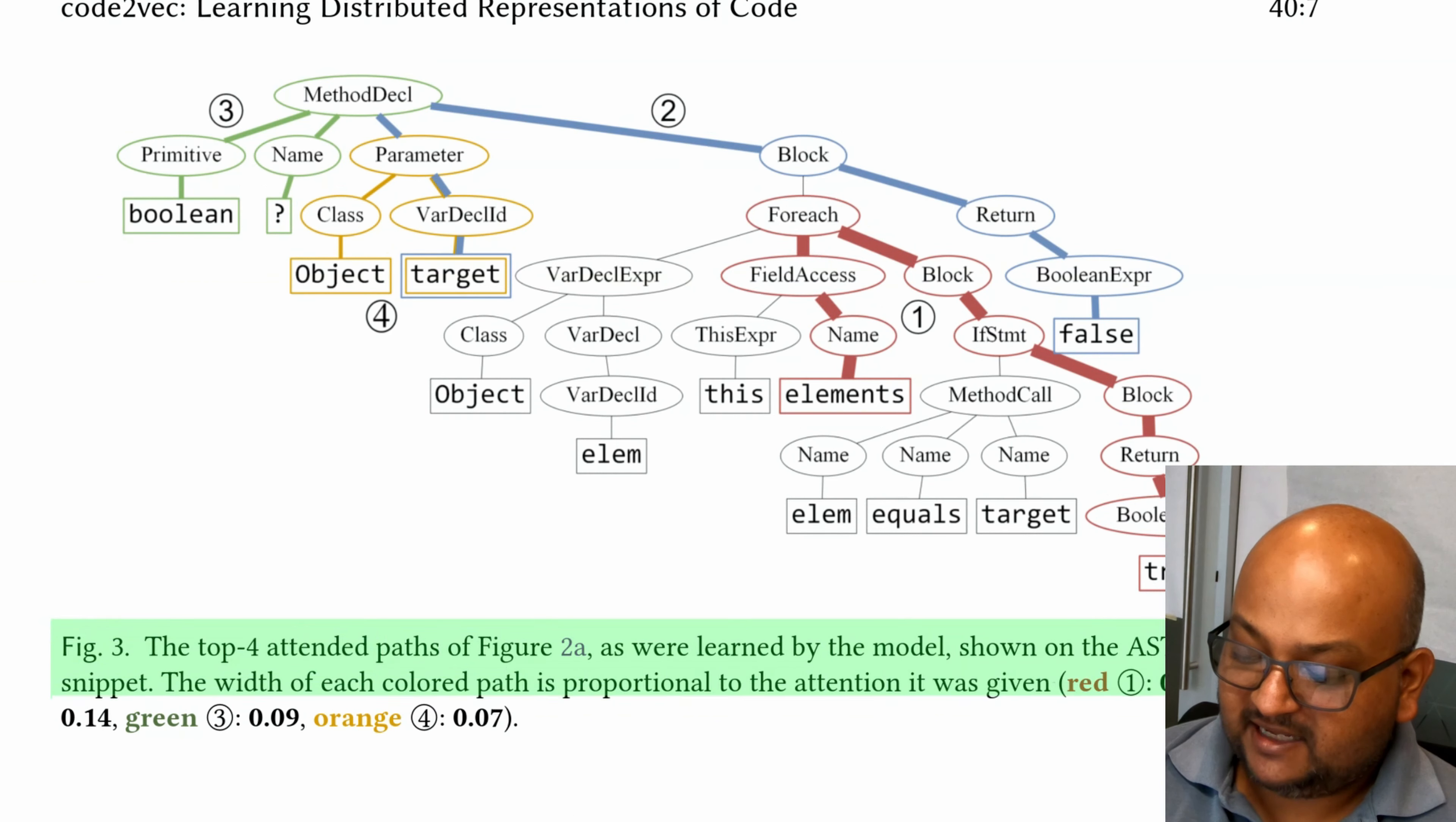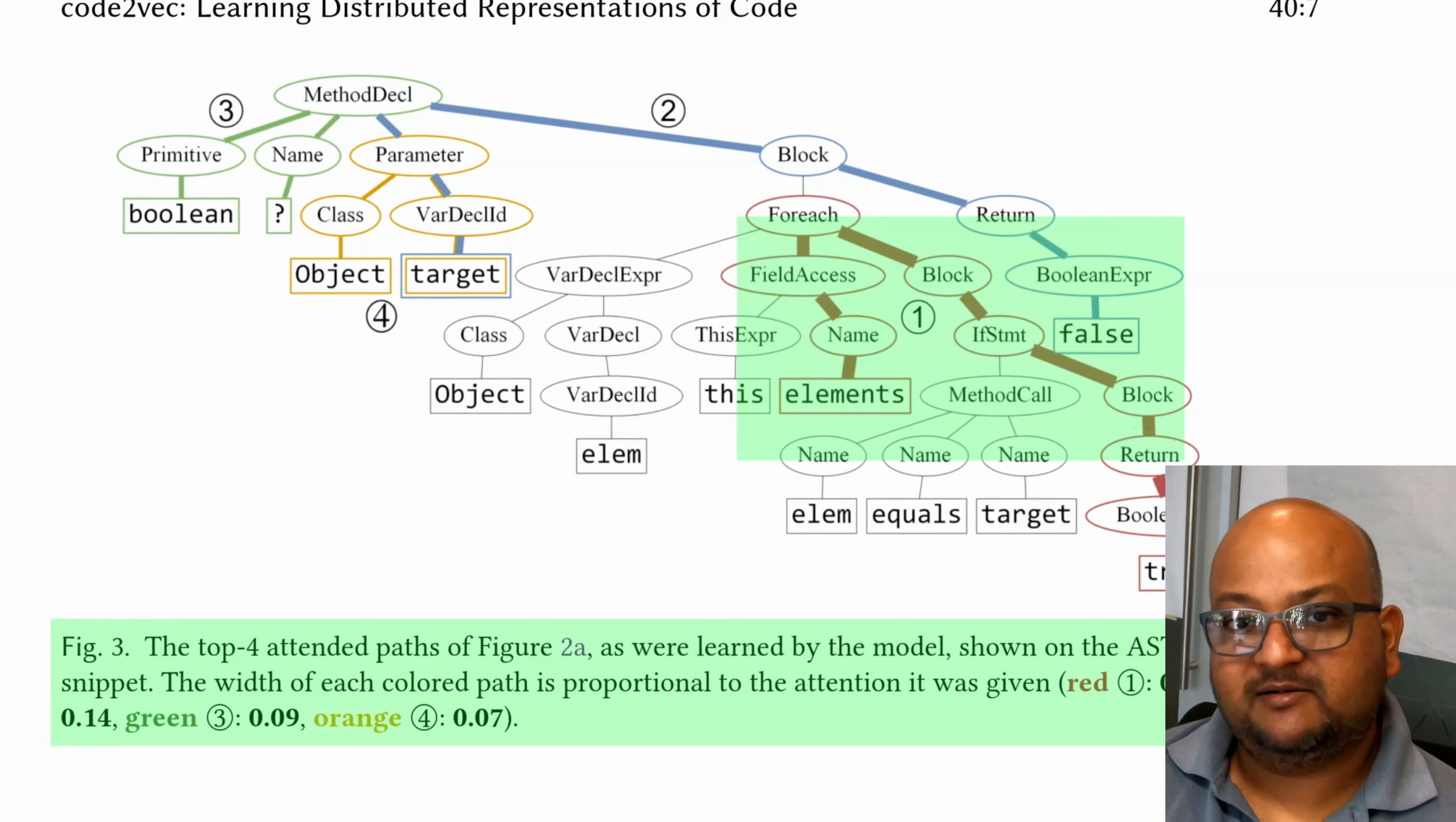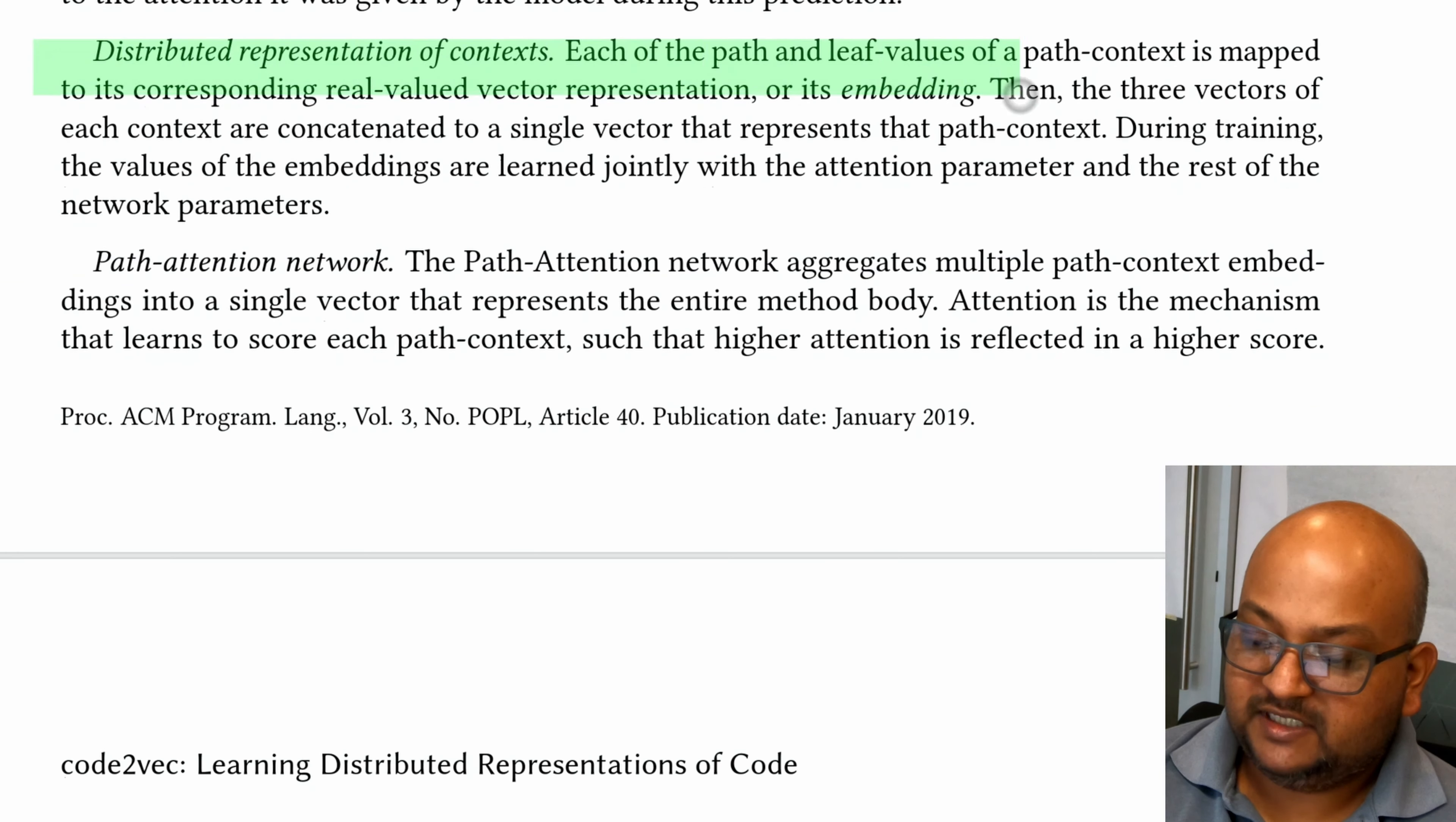This is the AST and the code paths for this first example. And you'll see that the attention value for the inner for loop is the one that is given the most weight. And this makes sense because that inner loop which looks for the element is the crucial searching part of this code snippet. Each of these paths is mapped to a vector representation. And that is what they call an embedding.